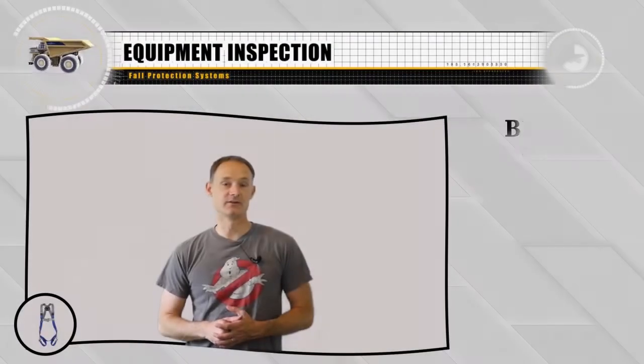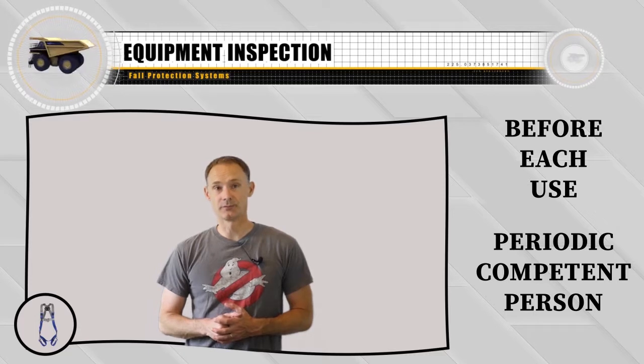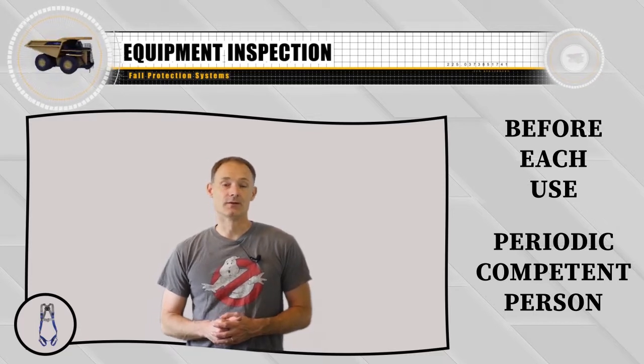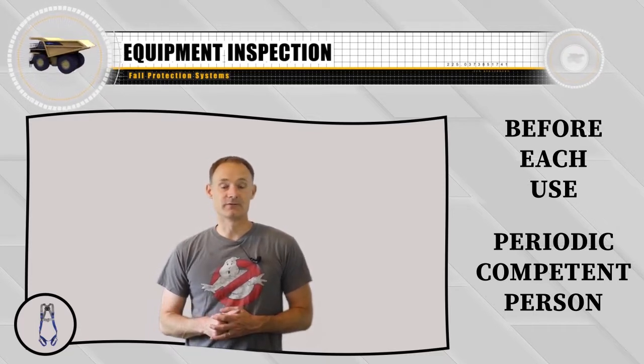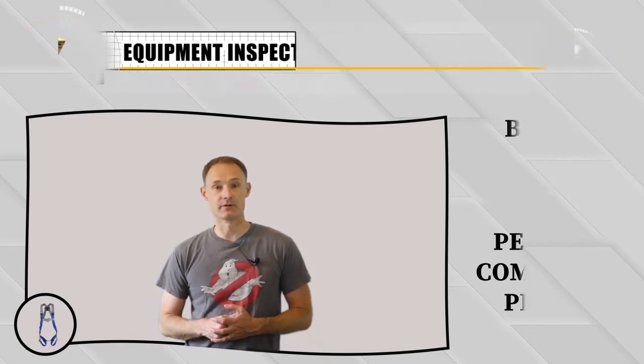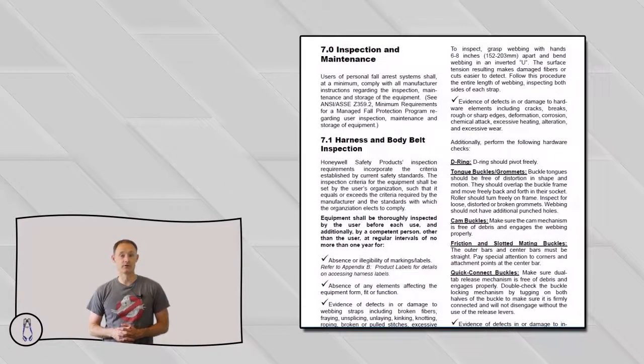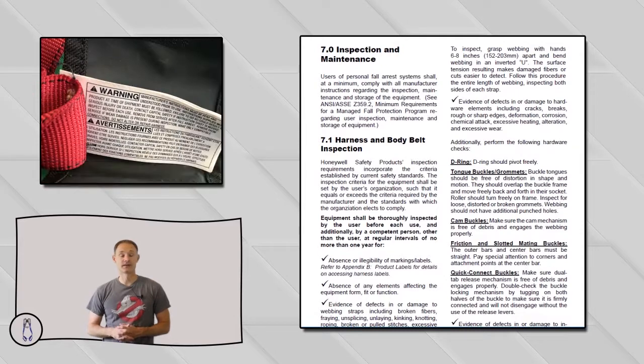All arrest systems need to be inspected prior to each use. A periodic inspection by a competent person is also required. Now ANSI recommends these periodic inspections be done at least annually, but check your equipment owner's manual because their requirements are often more frequent. The best place to get inspection requirements is from the owner's manual for the equipment that you are using. You can also often find it on the tag or label.